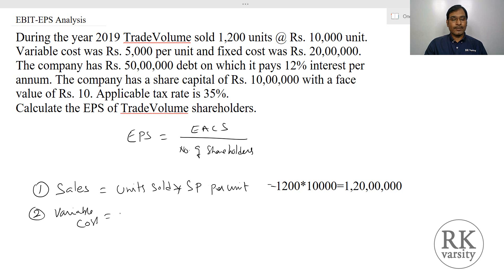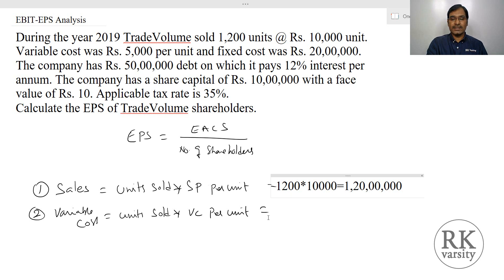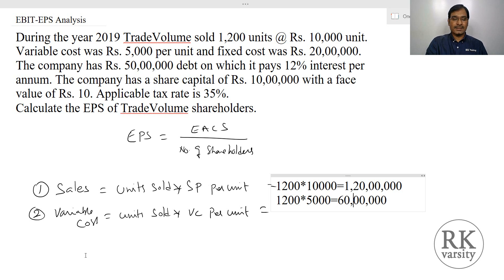Next, calculate the variable cost. Variable cost equals units sold times variable cost per unit. Units sold are 1,200 and variable cost per unit is 5,000. So 1,200 times 5,000 gives a variable cost of 60 lakhs.